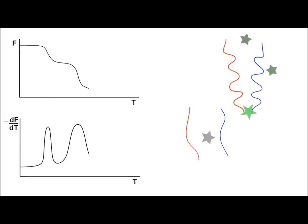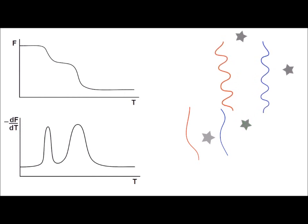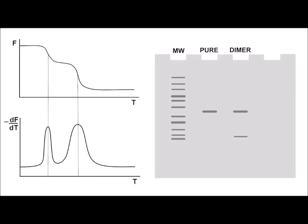As temperature continues to increase, the target melts, producing a second change in fluorescence peak. When the PCR products from this reaction are run on a gel, they will show only the band from the product of interest, because the primers are either too short to produce a signal or run off the end of the agarose gel.